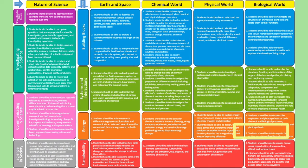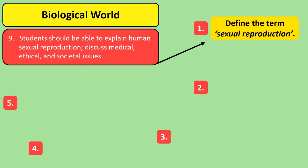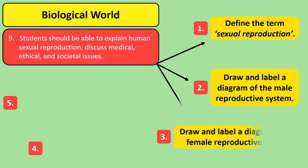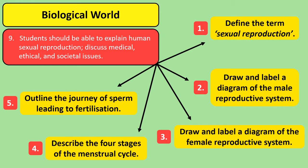Based on the NCCA learning outcomes, five points we'll be revising in this video are: what the term reproduction means; identifying, drawing, labelling and describing diagrams of both the male and female reproductive systems; studying the menstrual cycle and defining each of its four stages; and following the journey that sperm take through the female system for fertilisation to take place.